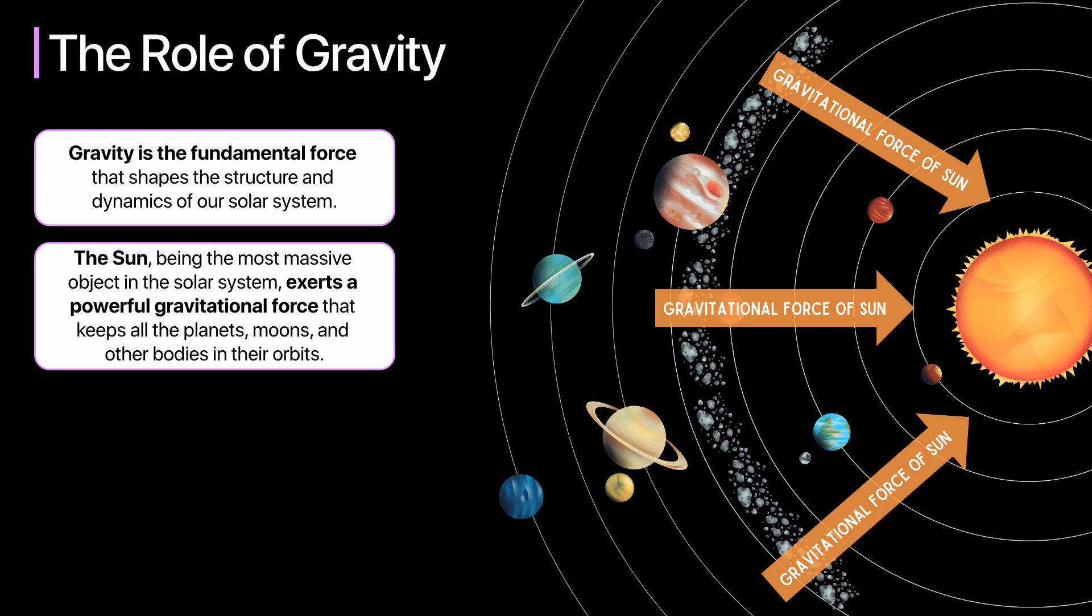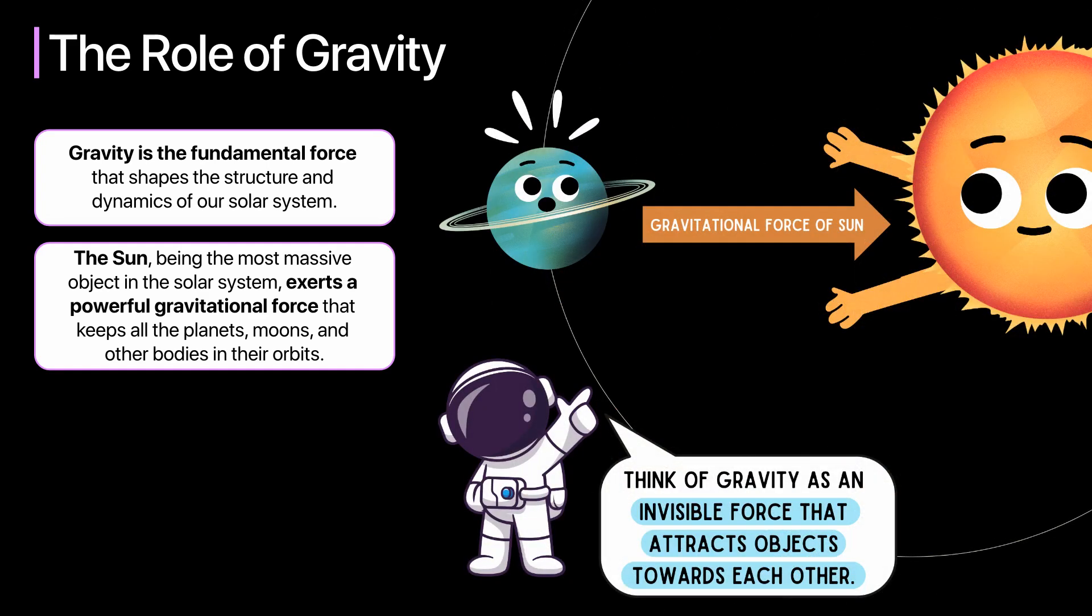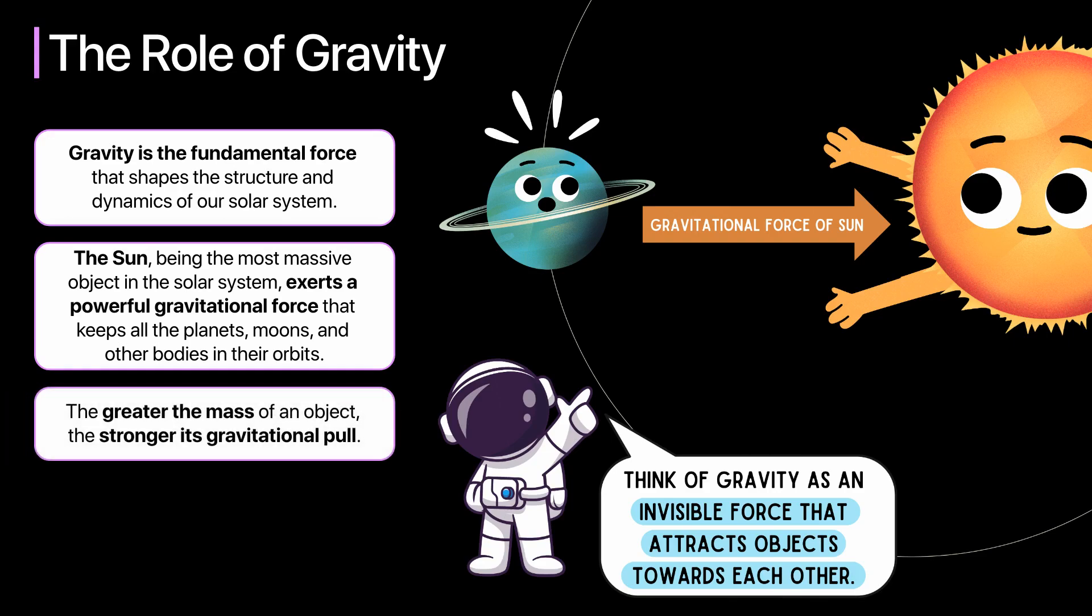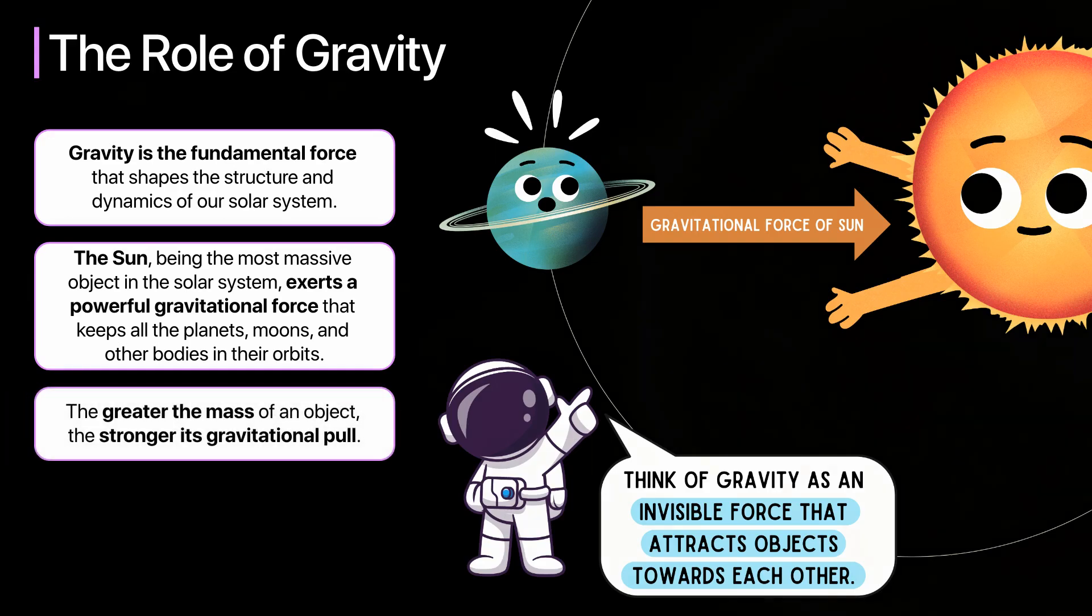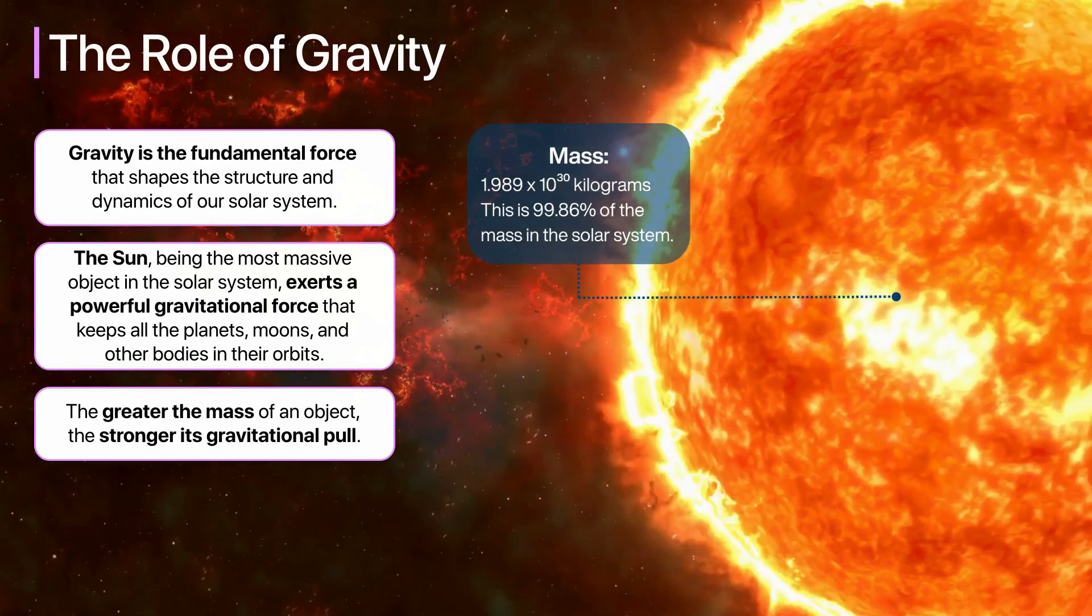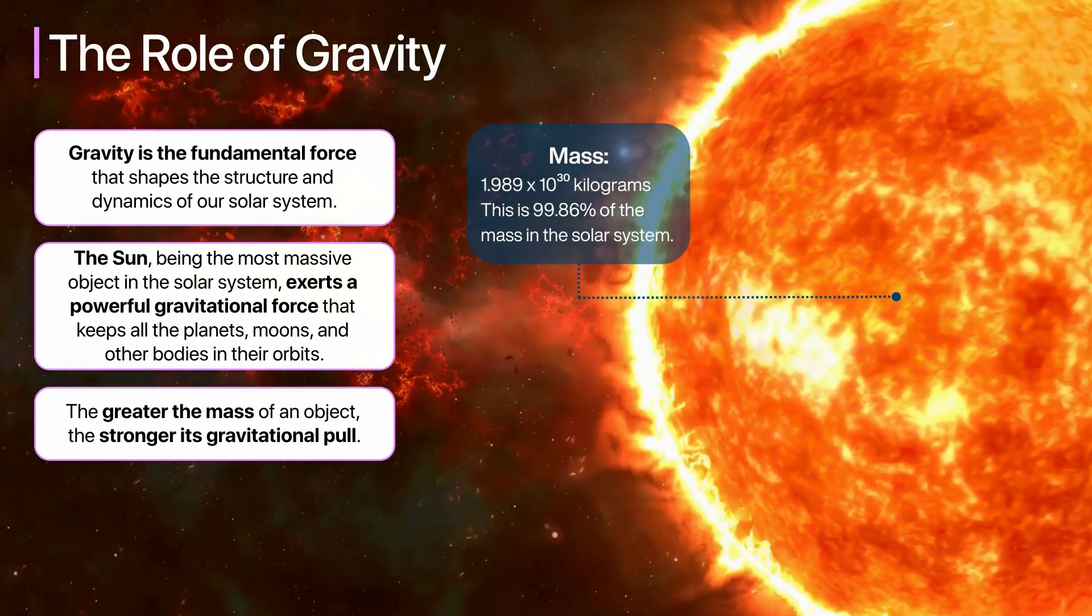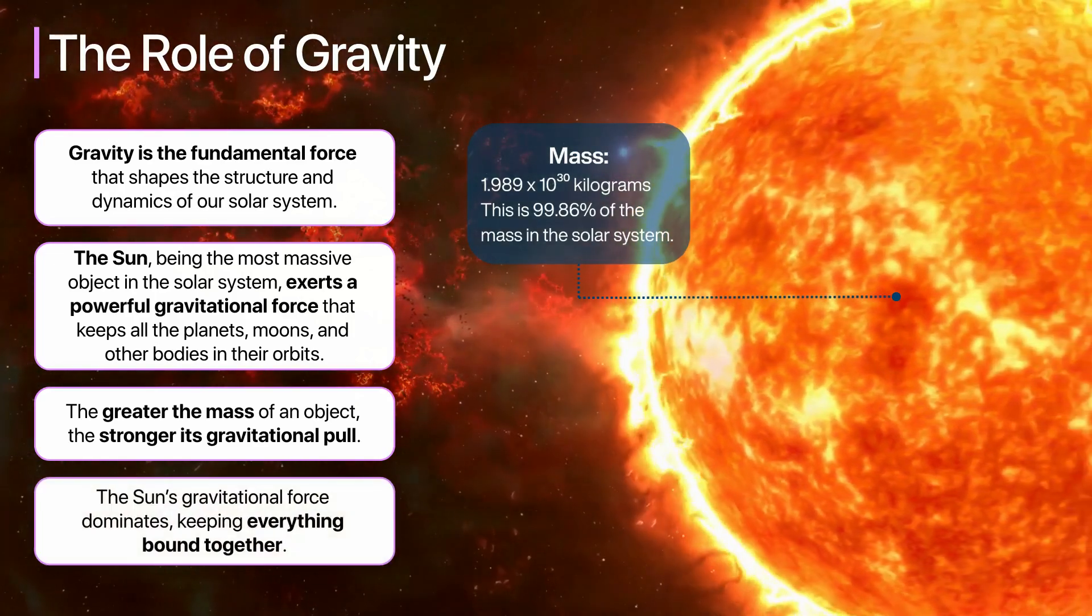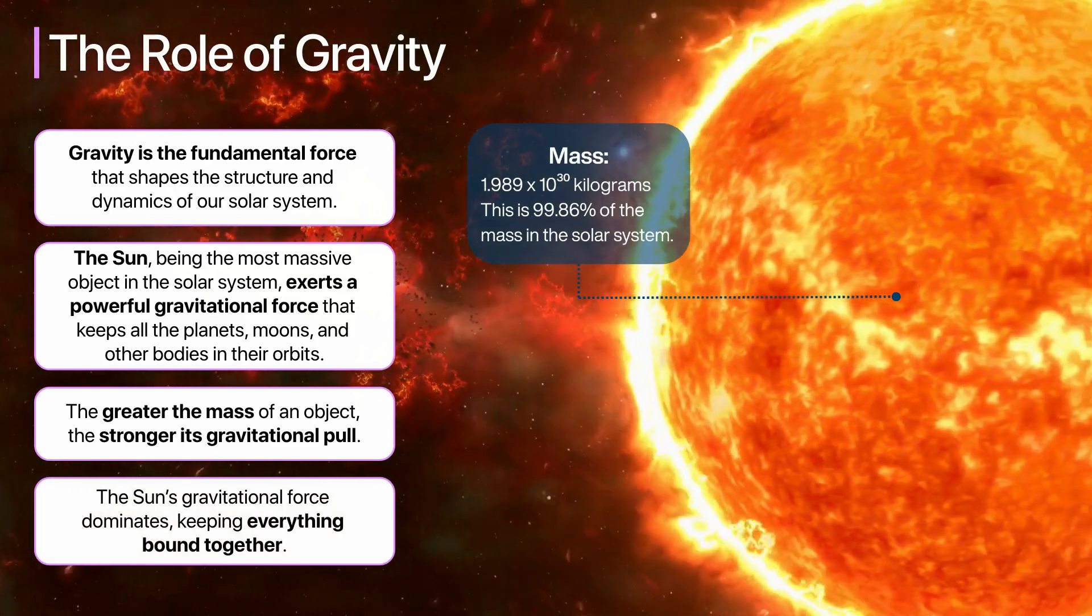To understand gravity, think of it as an invisible force that attracts objects towards each other. The greater the mass of an object, the stronger its gravitational pull. Because the Sun has about 99.86% of the mass in our solar system, its gravitational force dominates, keeping everything bound together.